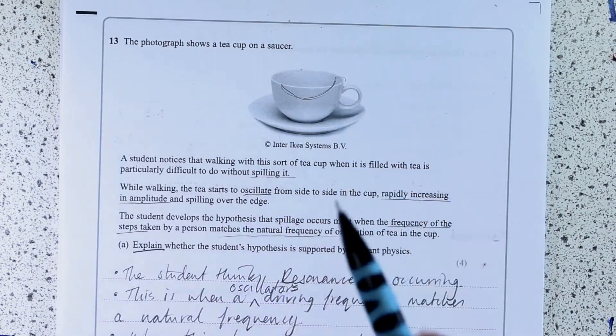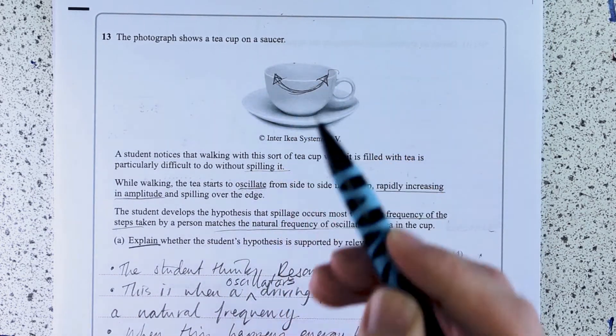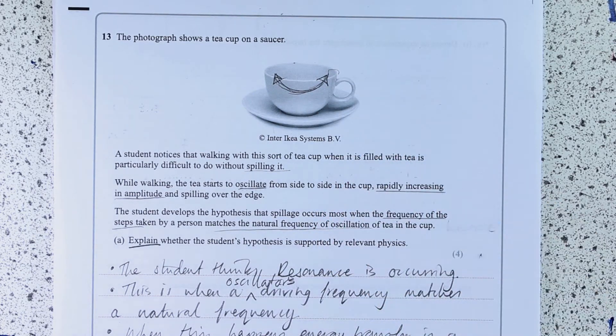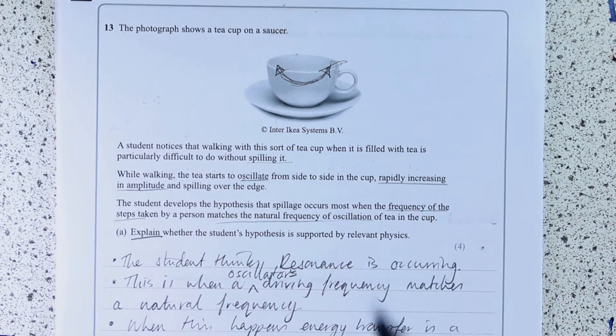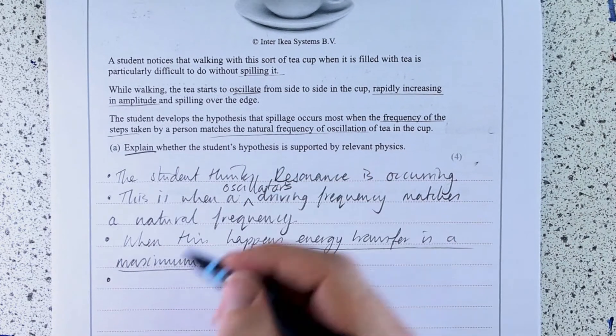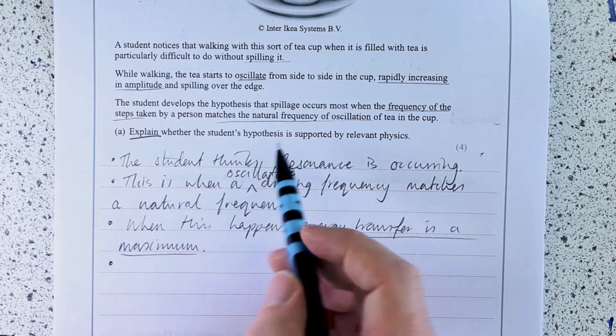If this matches the natural frequency of the tea sloshing backwards and forwards in the cup, which is a bit like a kind of pendulum motion, then there will be some spillage. Because energy transfer is a maximum and therefore the amplitude rapidly increases. And that's what he's observed.